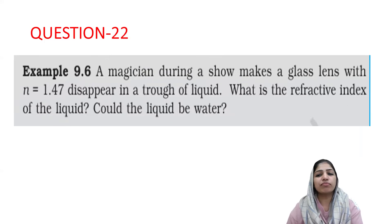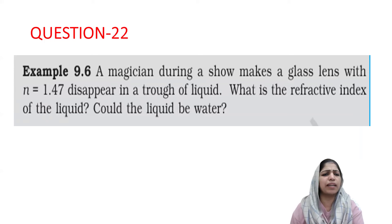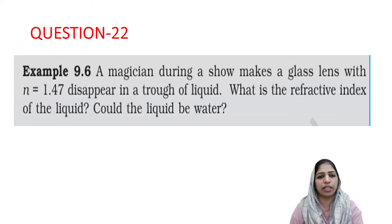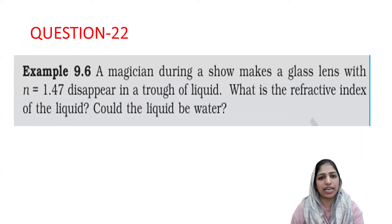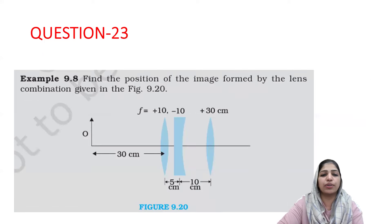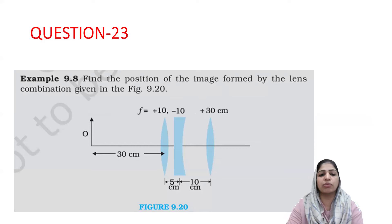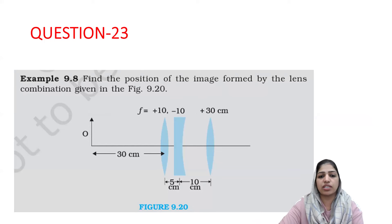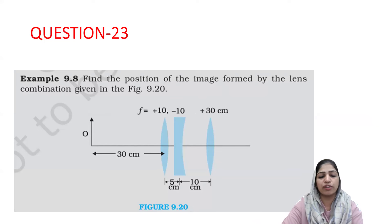Question number 22 is from Ray Optics, which has a variety of questions available. The Lensmaker's formula and total internal reflection problems are definite items expected in the exam. Example 9.8 involves a combination of lens and mirror. We can solve problems involving three lenses or a combination of a lens and a mirror.